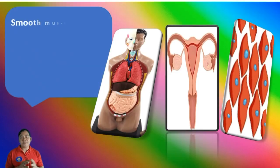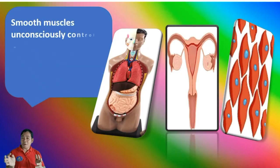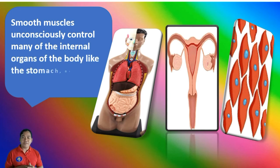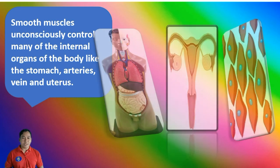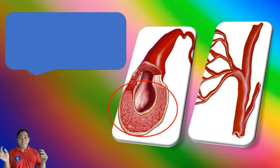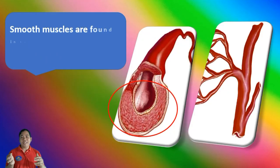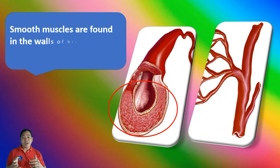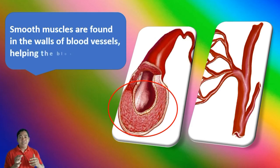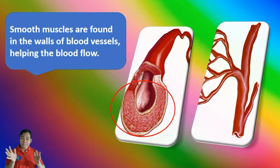Smooth muscles unconsciously control many of the internal organs of the body, like the stomach, arteries, intestines, and uterus. Smooth muscles are also found in the walls of the blood vessels, helping the blood flow.